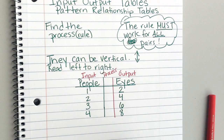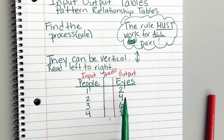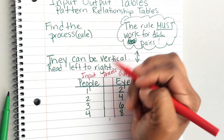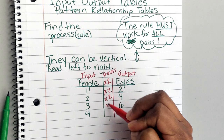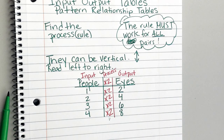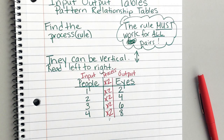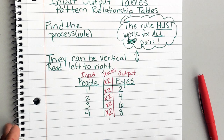The rule must work for ALL pairs. One plus one is two, but I have to make sure it works for all of them. If I think the rule is plus one, two plus one is three — but I got four, so that can't work. Let me try multiplication: one times two is two, two times two is four, three times two is six, four times two is eight. It works for all pairs! The rule — or the process — is times two. Draw your process line and put the rule. That's what it looks like for a vertical pattern relationship table.